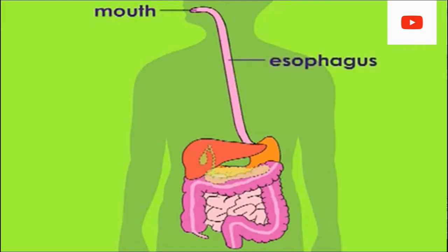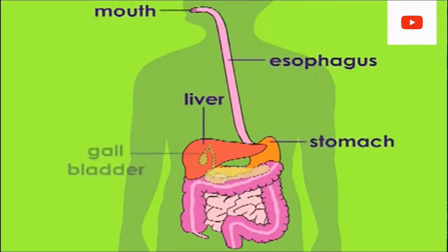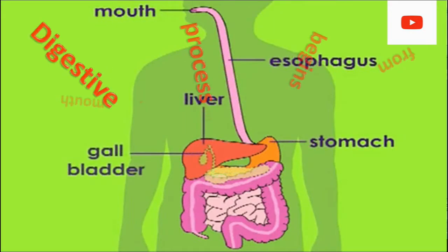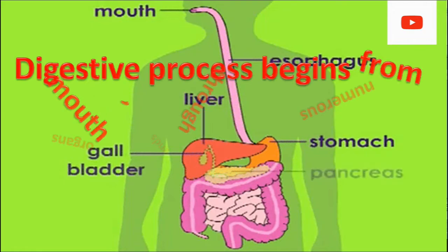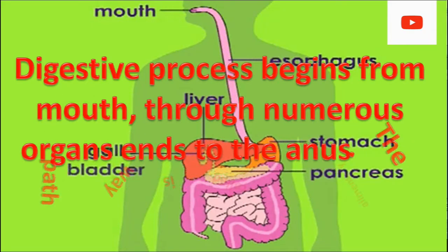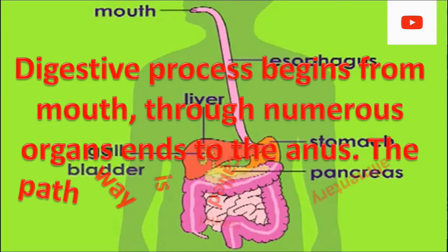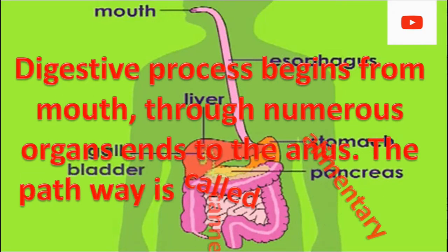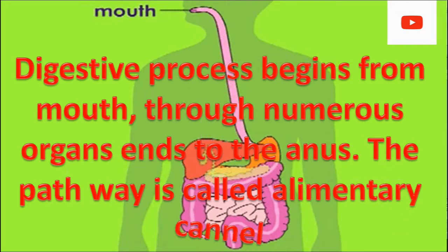The digestive system begins from the mouth to the esophagus to the stomach, intestine, and into the anus through various organs. This pathway is called the alimentary canal.